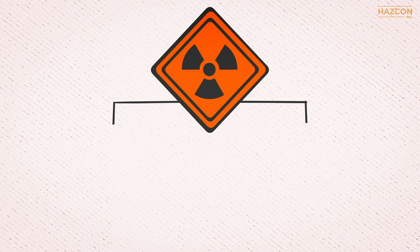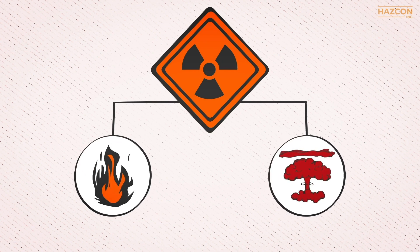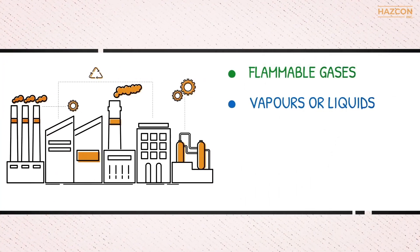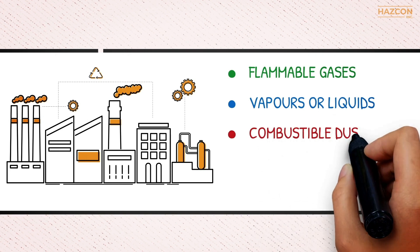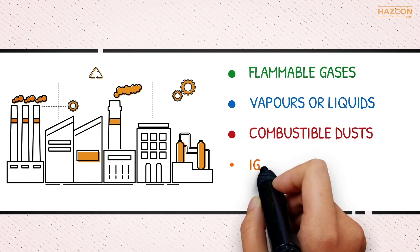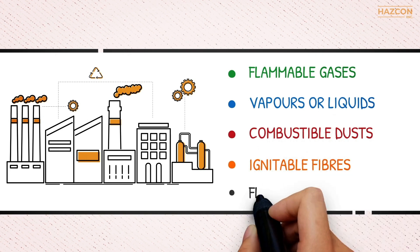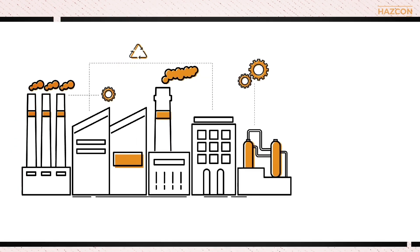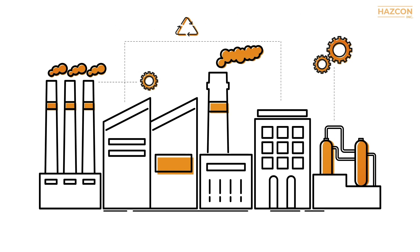Hazardous locations are defined as those where fire or explosion hazards may exist due to the presence of flammable gases, vapors, liquids, combustible dusts, or ignitable fibers or flyings. Electrical equipment is often installed in locations where these hazards are present, making them hazardous locations.